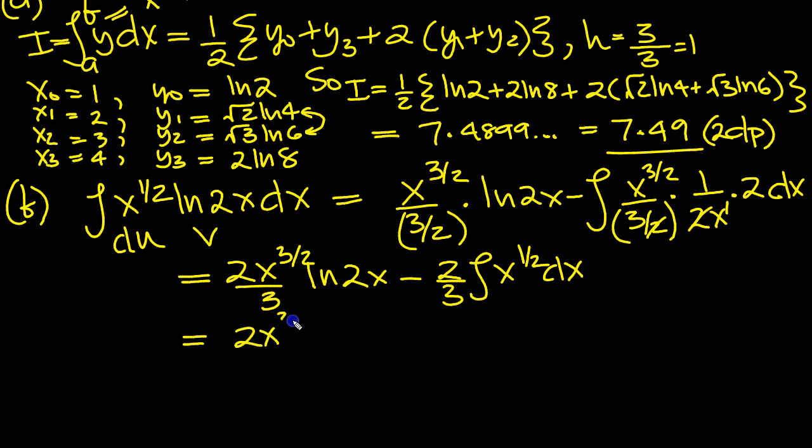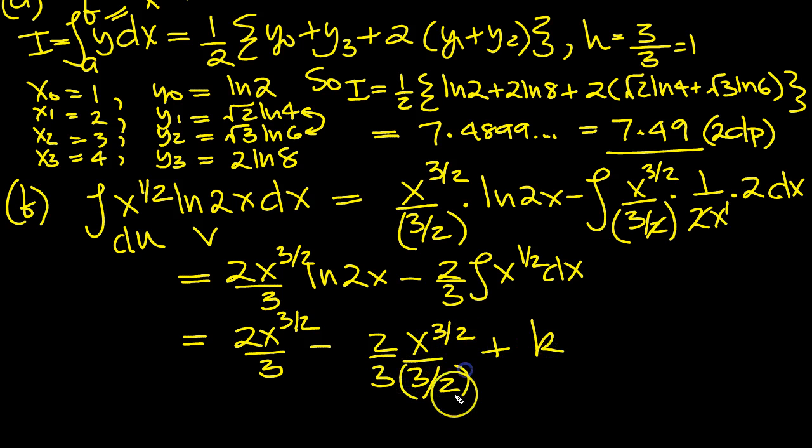So we've got 2x to the 3 over 2 over 3 minus. Now here we've got x to the 3 over 2, when we integrate, over 3 over 2. We've got a 2 thirds, lots of, plus k. Now I'm going to just adjust this in one fell swoop, rather than write a fresh line. So the 2 can swing up to be with that 2 to make 4, and the 3 times 3 is 9. So it's 4 ninths I'm going to write now. 4 over 9. So that's what we've got then for our integral.